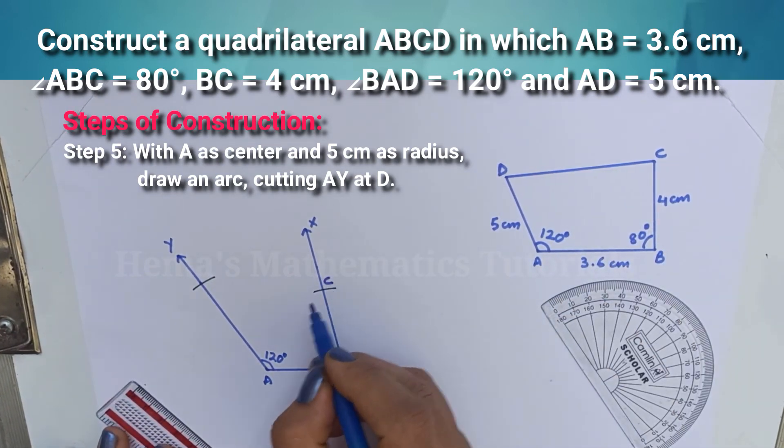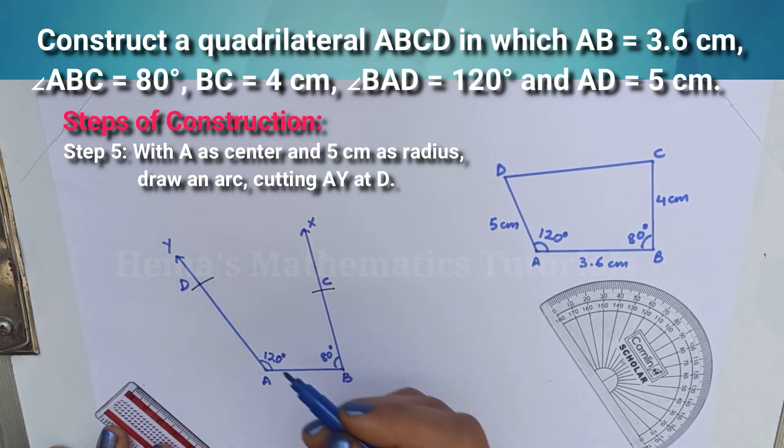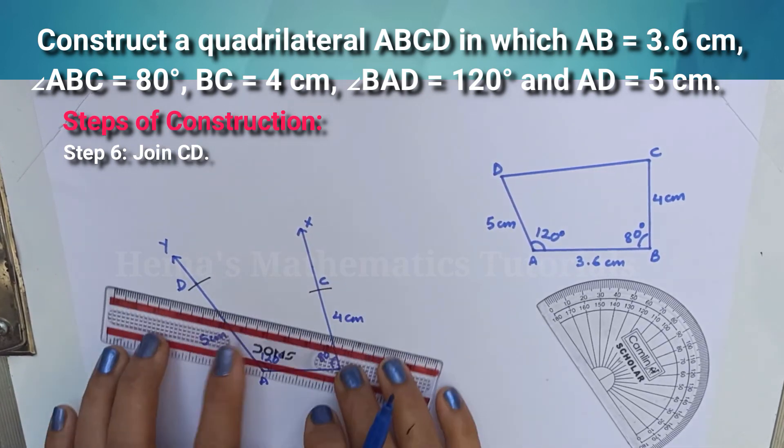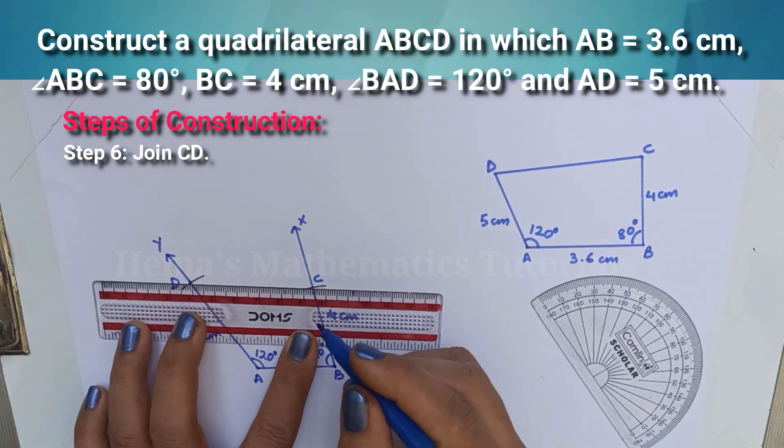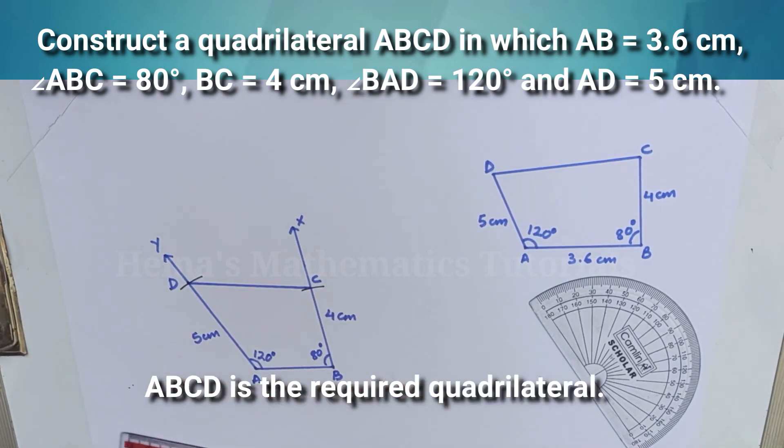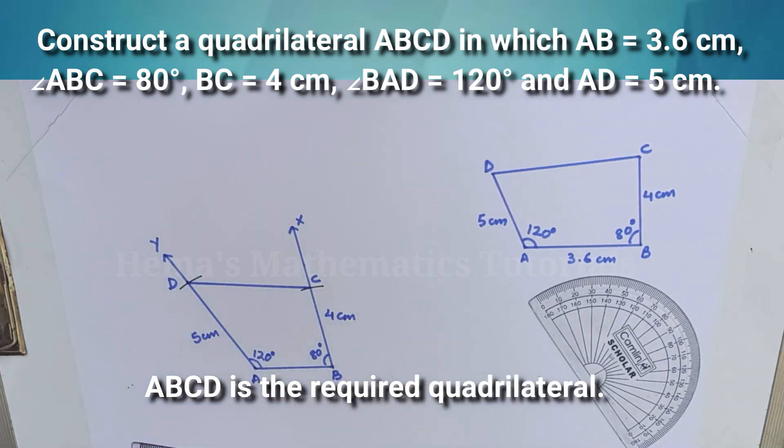This is point C and this is D. Join CD. Now, ABCD is the required quadrilateral.